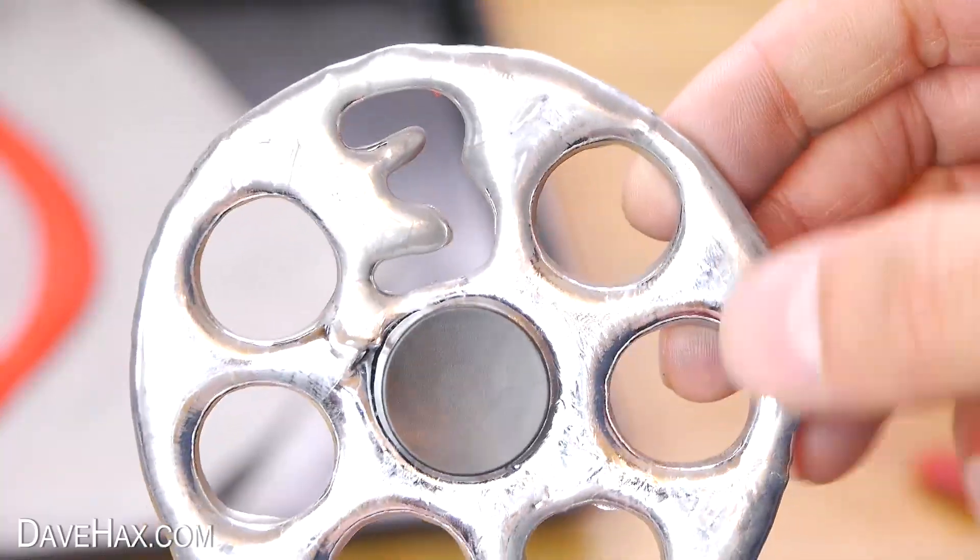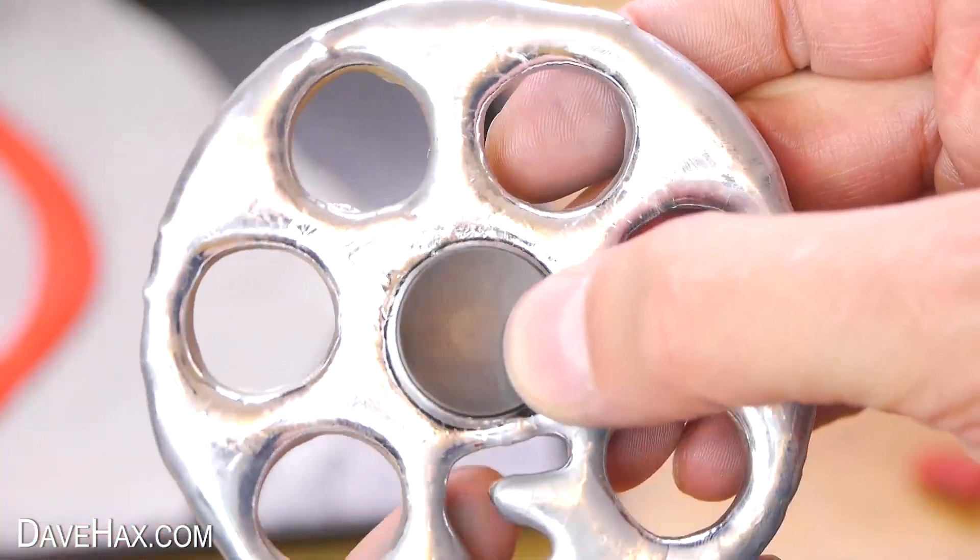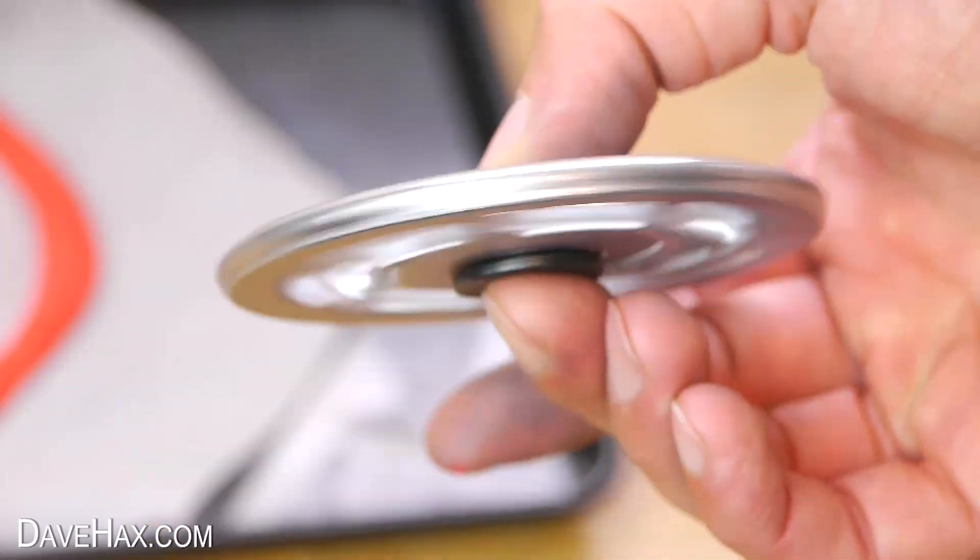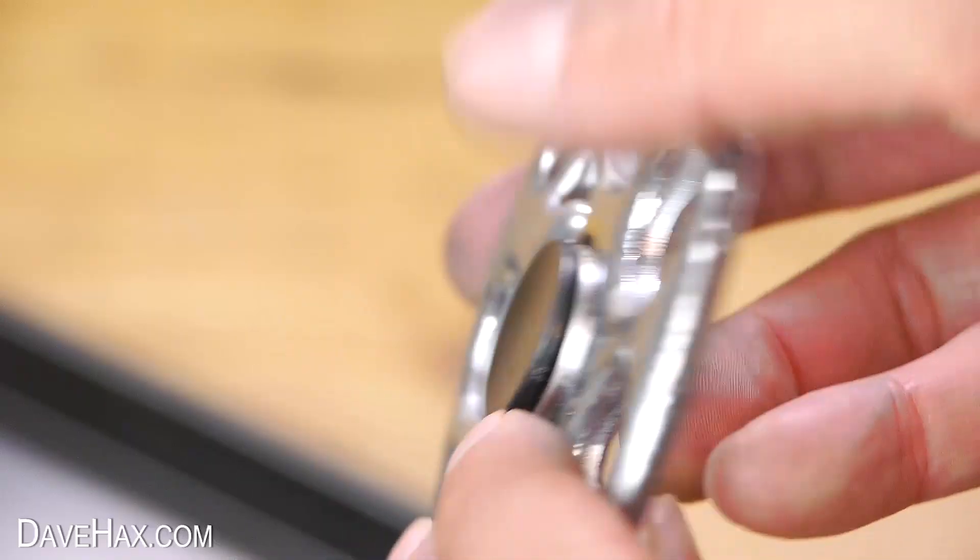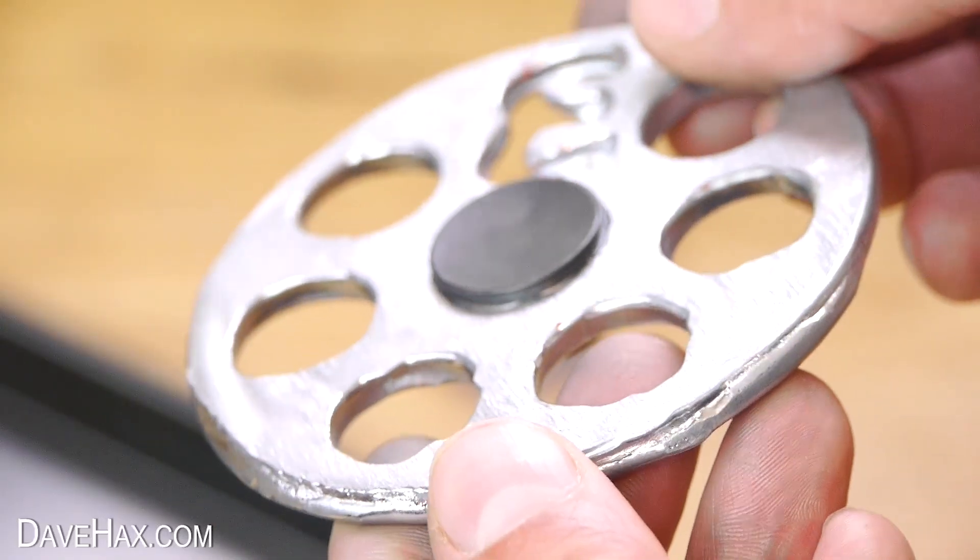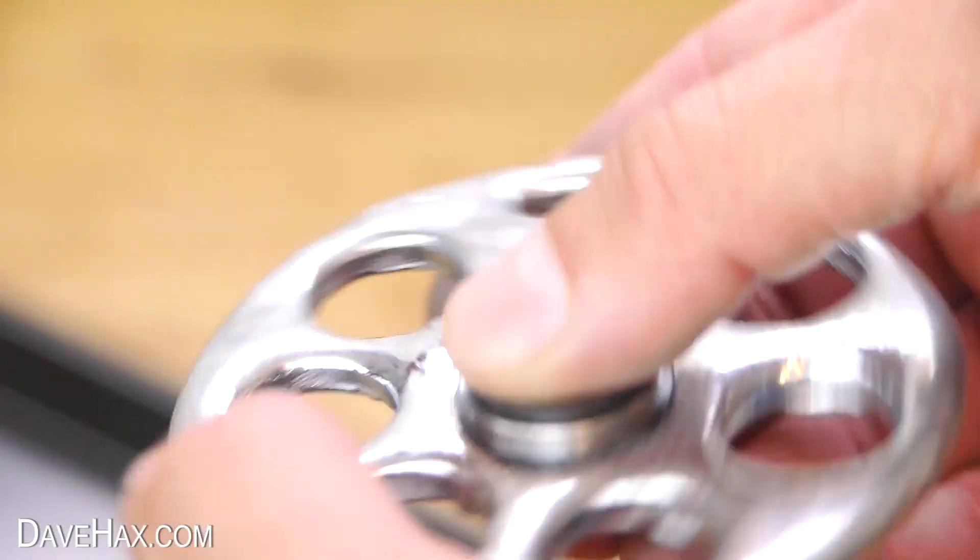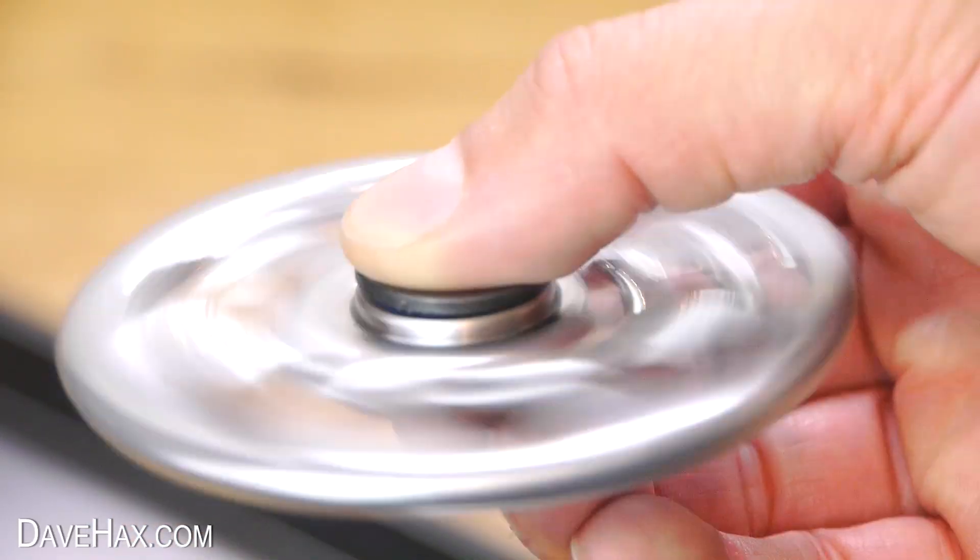And there it is, 3 followed by 6 zeros. It feels really well balanced this spinner and it's nice and smooth on the back where it was flat against the baking paper. It spins really well and it was great fun to make.